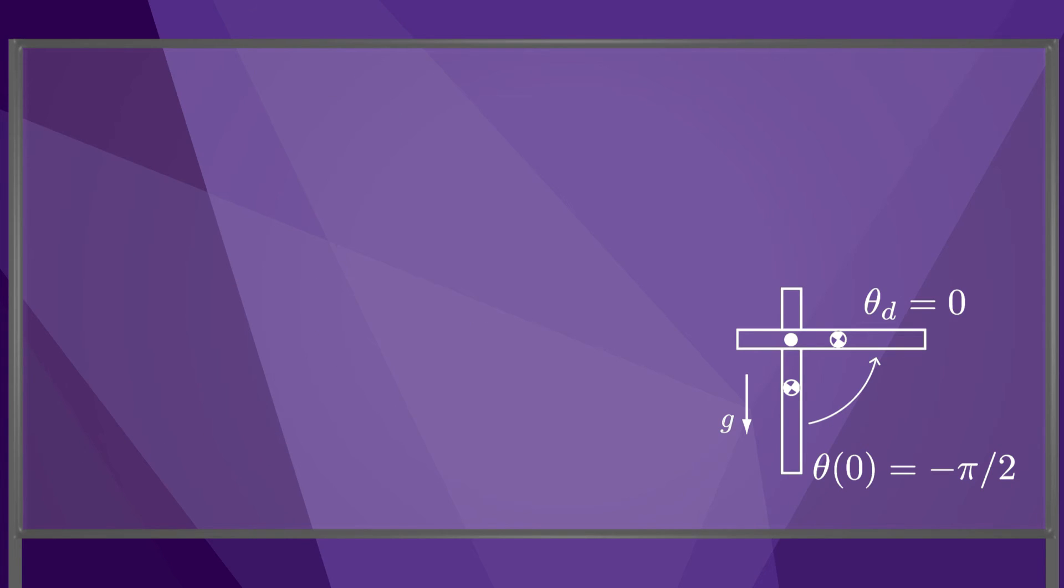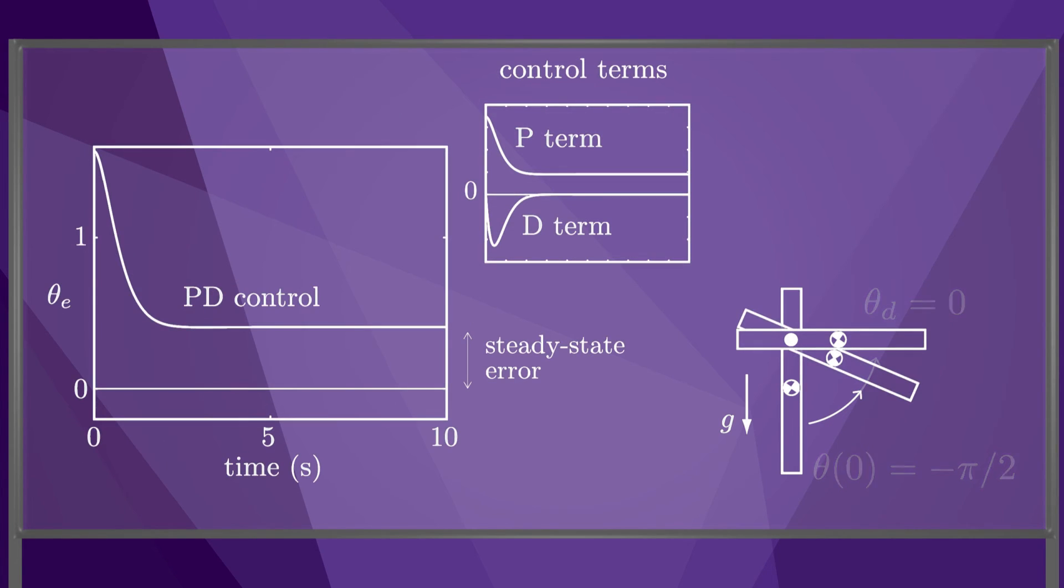Returning to our example setpoint control problem, we recall that our original PD controller results in steady-state error. Adding a positive gain KI, we see that the PID controller drives the steady-state error to zero. The overshoot shows that the response is somewhat under-damped.